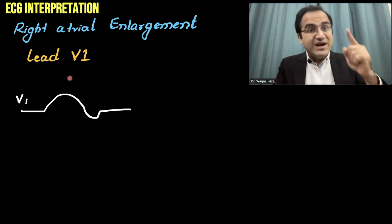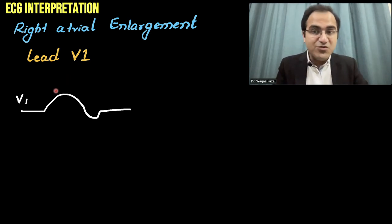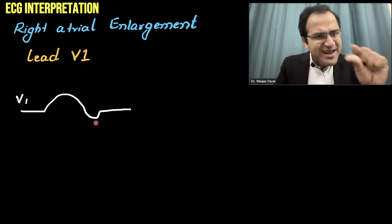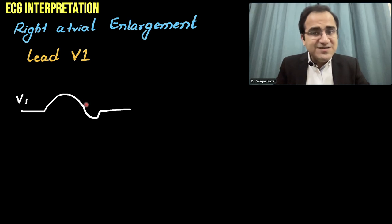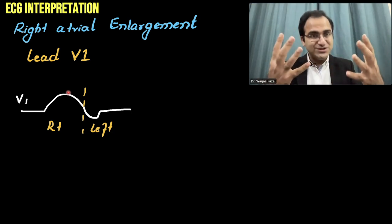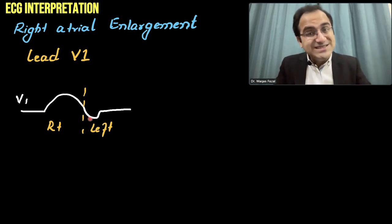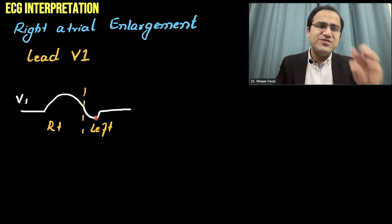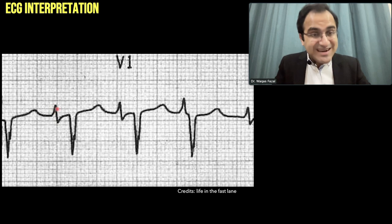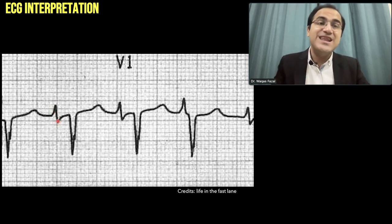In lead V1 specifically, you will see a different morphology — a biphasic P wave. In the biphasic P wave, there will be a huge positive deflection followed by a negative deflection. This huge positive deflection occurs due to depolarization of the right atria, because the right atrium is enlarged. The negative deflection will be small because that shows the left atrial depolarization and the left atria is small. This ECG shows the biphasic P wave — the huge positive deflection shows the right atrium and the small negative deflection shows the left atrium. That biphasic wave is specifically seen in V1.